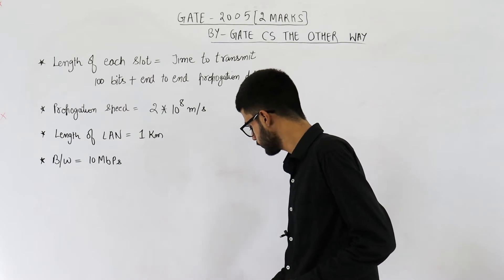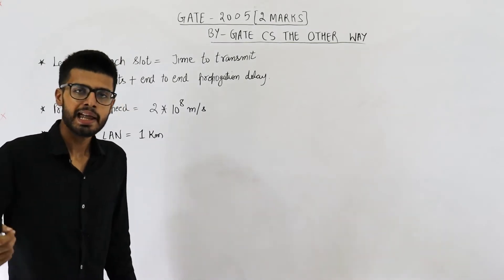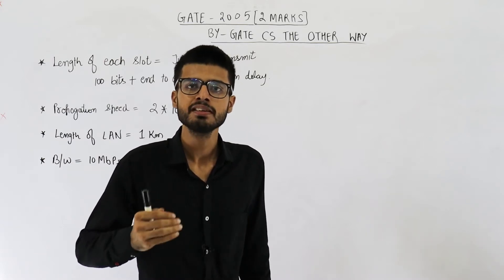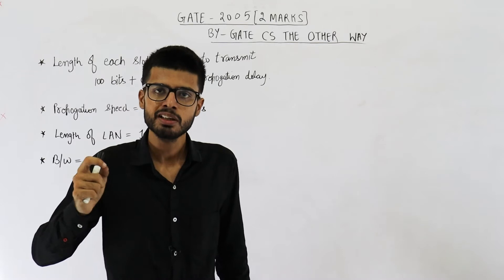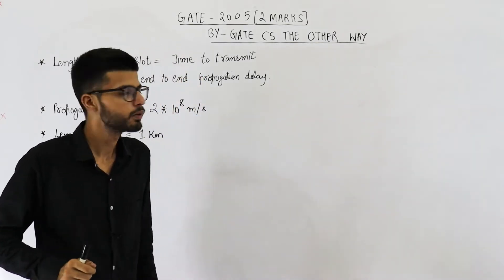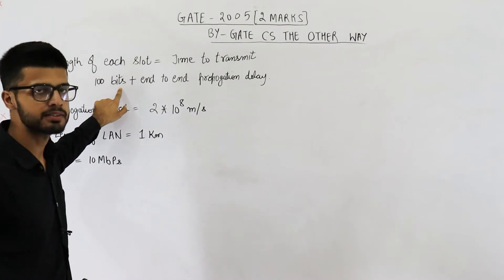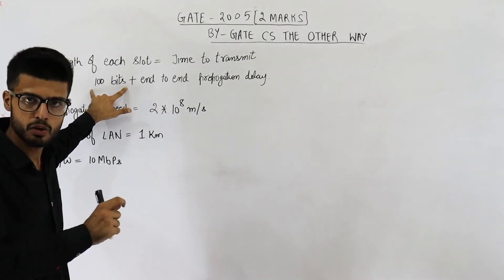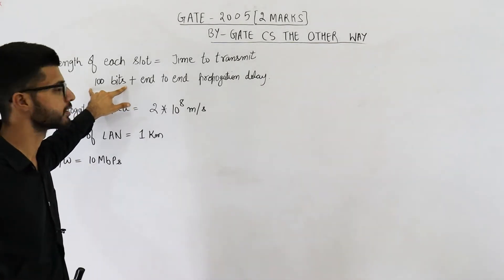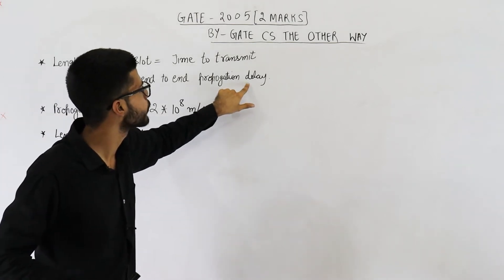They are talking about time division multiplexing. In TDM, N number of stations share a common channel. We divide time into slots and one slot is assigned to one station. Each station can send some fixed amount of data in its own time slot. They are saying the length of each time slot is the time to transmit 100 bits — that means the fixed amount of data is 100 bits. Each station can send only 100 bits in one time slot, plus the end-to-end propagation delay.